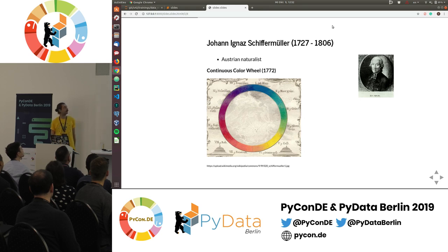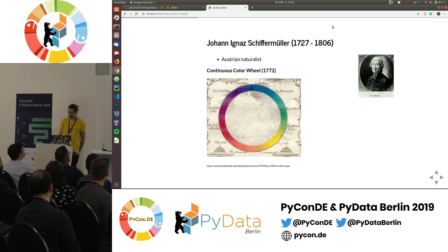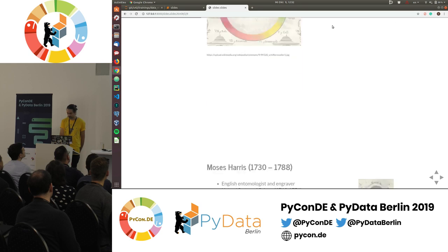Johann Schiffermüller was an Austrian naturalist who was the first to come up with a continuous color wheel — combining all those colors into something more continuous, the way we use it now. He came up with 12 colors, and in addition to the color wheel he described a table with 81 shades of color, showing a strong connection to art and painting.